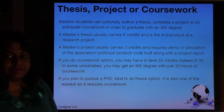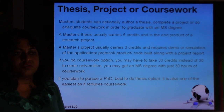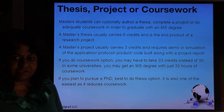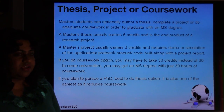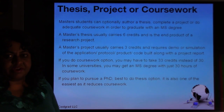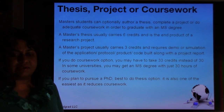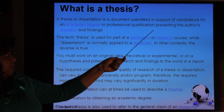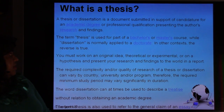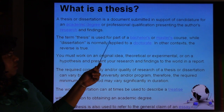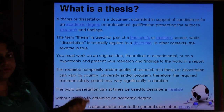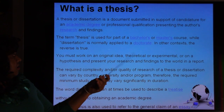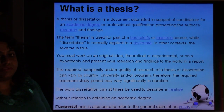To recap graduation options: a thesis is about six credits so you take roughly seven or eight courses; a master's project is three credits so you take eight or nine courses; and coursework alone means 10 or 11 courses. A thesis is called a thesis at the master's level and a dissertation at the doctorate level — though in some contexts it's vice versa. It doesn't matter so much.